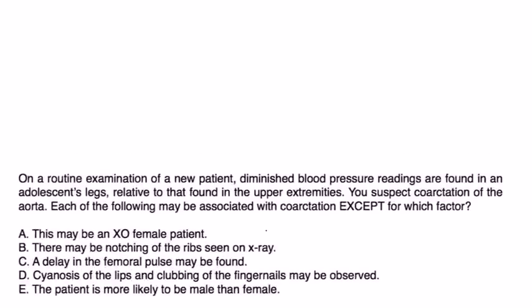Let's take a look at a few vignettes and see what this looks like. On a routine exam of a new patient, diminished blood pressure readings are found in an adolescent's legs relative to that found in upper extremities. You suspect coarctation of the aorta. Each of the following may be associated with coarctation except: it may be an XO female patient, that's possible because XO is a karyotype in Turner. There may be notching of the ribs seen on x-ray, that's correct because a large volume of blood through the intercostal arteries results in this gradual erosion of those adjacent bones.